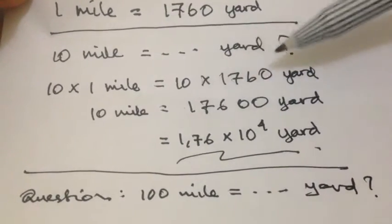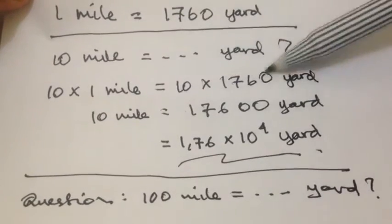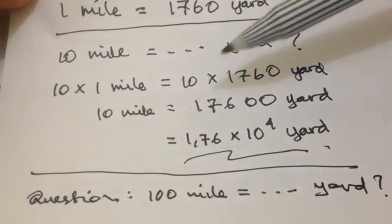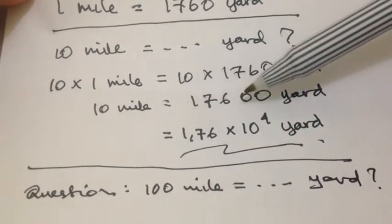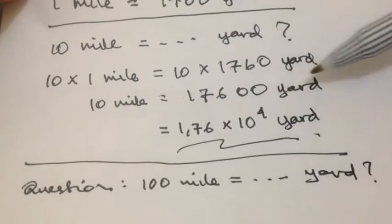And then we multiply it with this number. So we have this number as well over here. Then, 10 miles is equal to 17,600 yards.